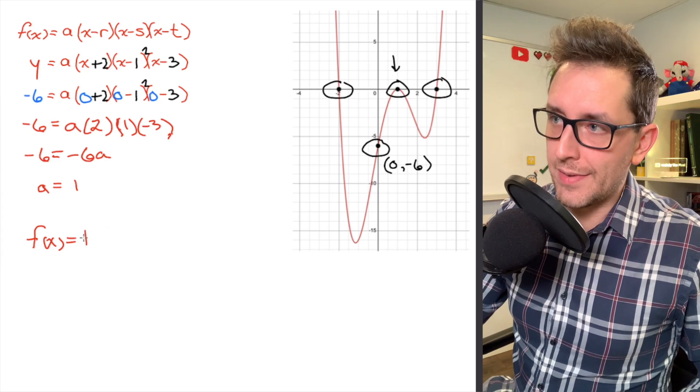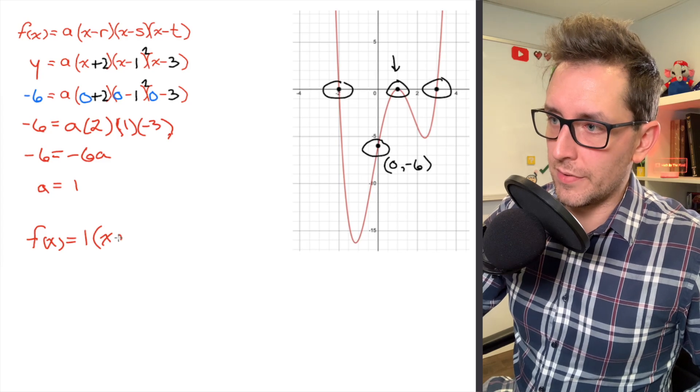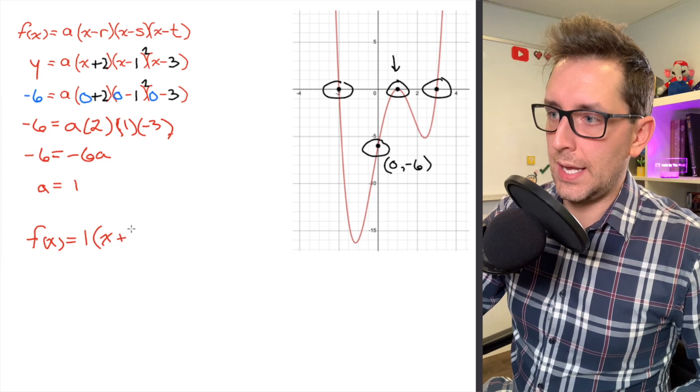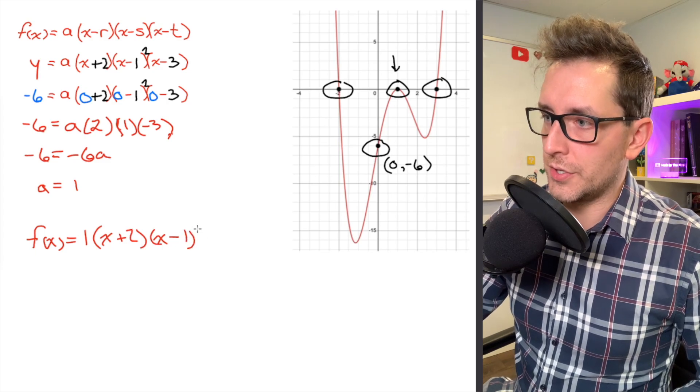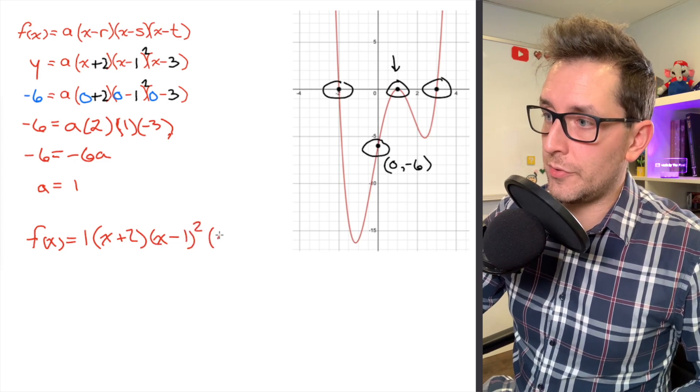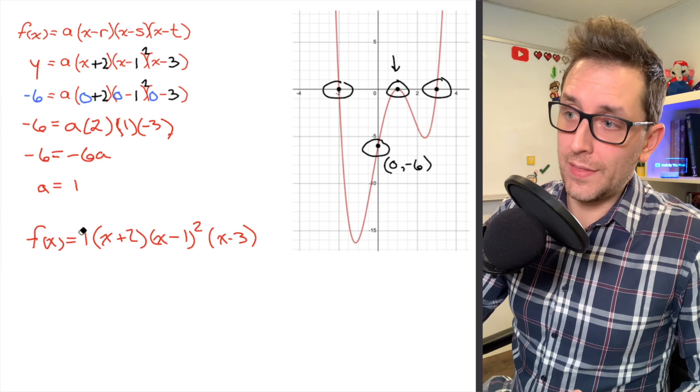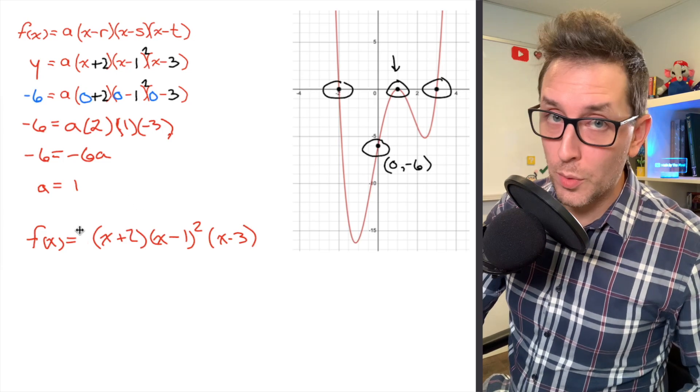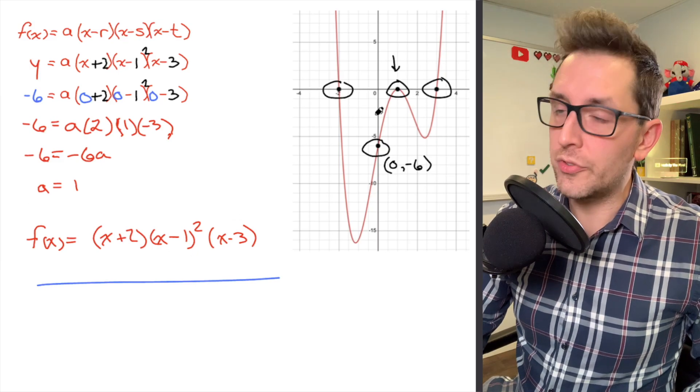So what we're going to do now is just go back to our original equation and sub everything in that we learned. We learned that the value of a is equal to 1. So I'm just going to write a 1 there as my a value. And then, of course, we also picked up on all of the x-intercepts of the function. So I'm going to place those inside each set of brackets so that I have a nice, clean function that represents the graph of this polynomial function. There we are. There's our function. And I don't like that 1 at the beginning, because we don't need to write 1 when we're multiplying. So we've successfully determined the equation of the polynomial that will produce this graph.